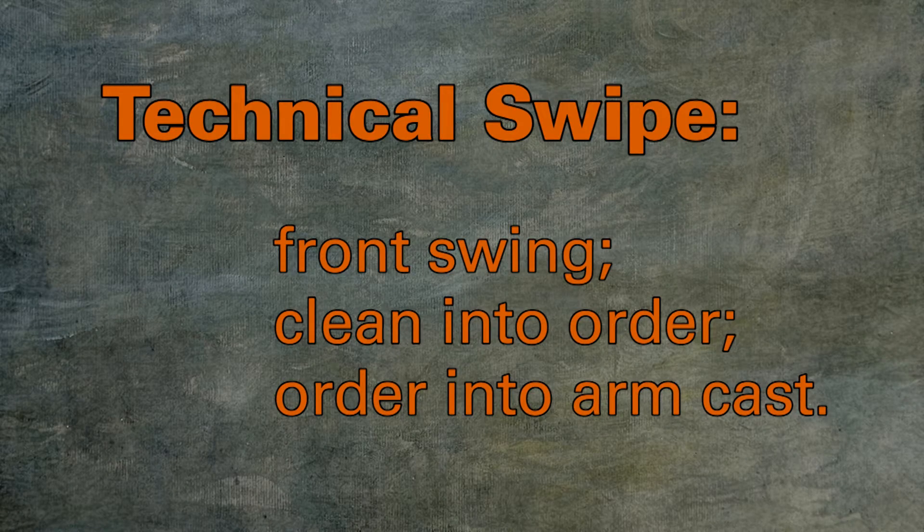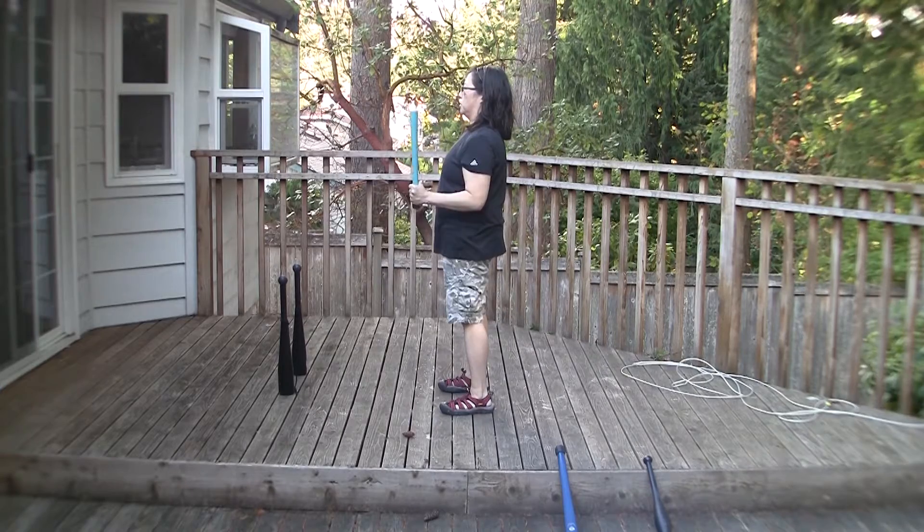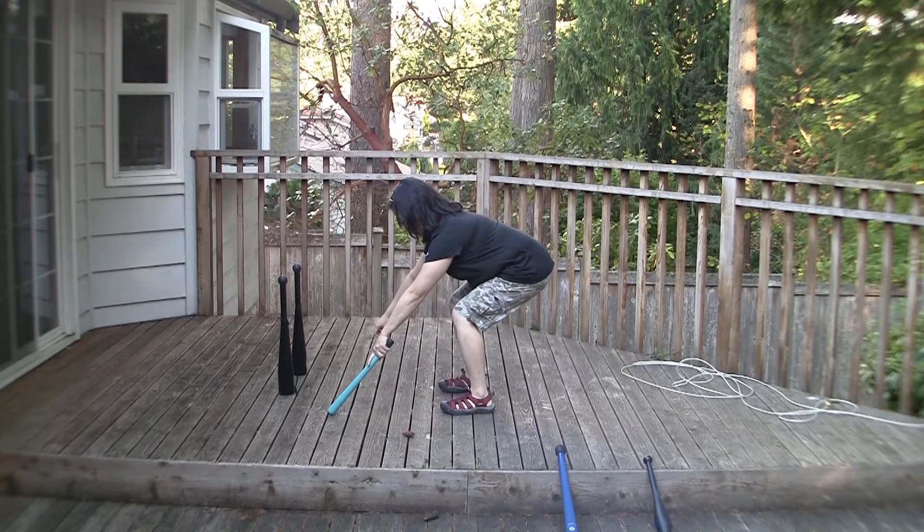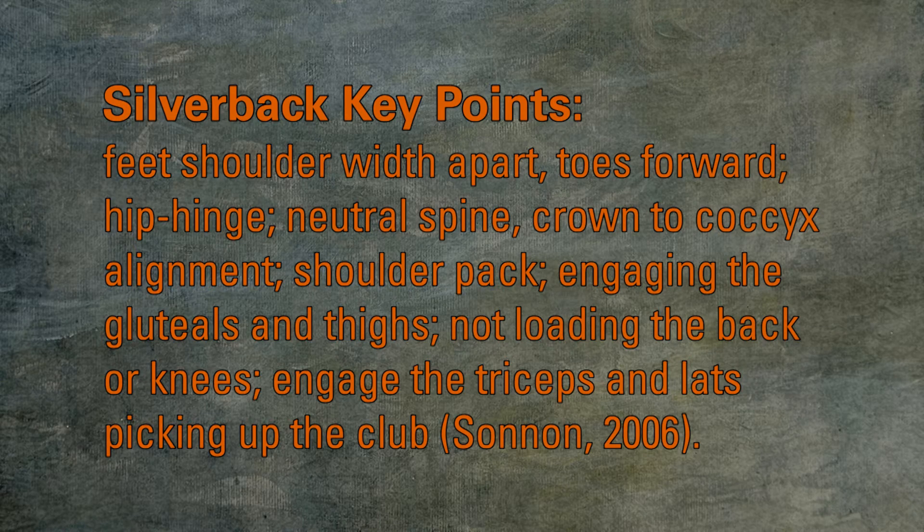The technical swipe can be broken down into three parts: the front swing clean into order position, then from order position, perform the arm cast. Start in the silverback ready position to perform the movement preps leading up to the technical swipe. The silverback position is a sit-back position.